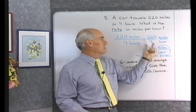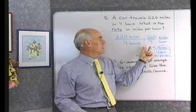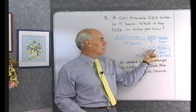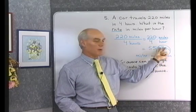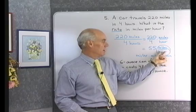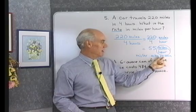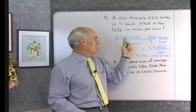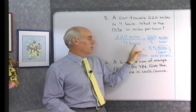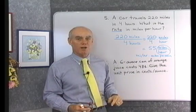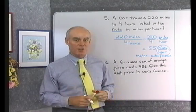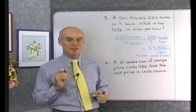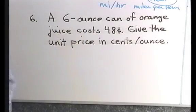In any case, this rate in miles per hour is 55 miles per hour, and I can write it any of these three ways. It starts out as a ratio, and since I'm comparing two different quantities, that's why we call it a rate. Let's look at another one.